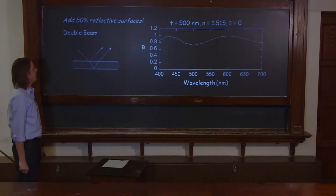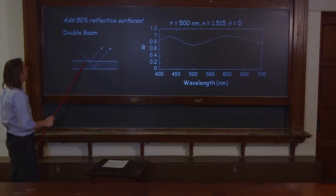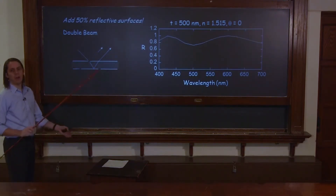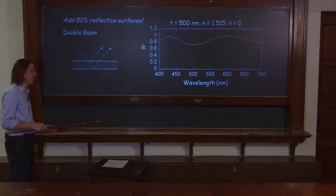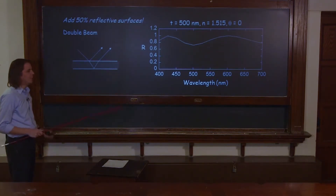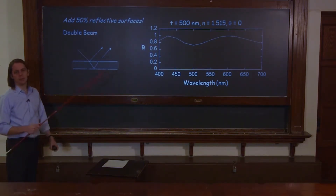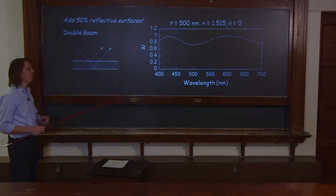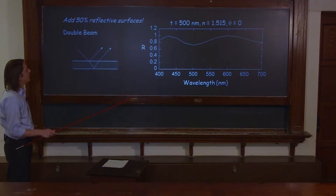But now let's do something else — let's make r higher. We haven't talked about what happens with Fresnel's equations at a metal, but basically if you put a metal on here, you can get little r instead of 0.2 up to 0.5 or 0.9 or as high as you want. We're going to set little r to about 0.9.